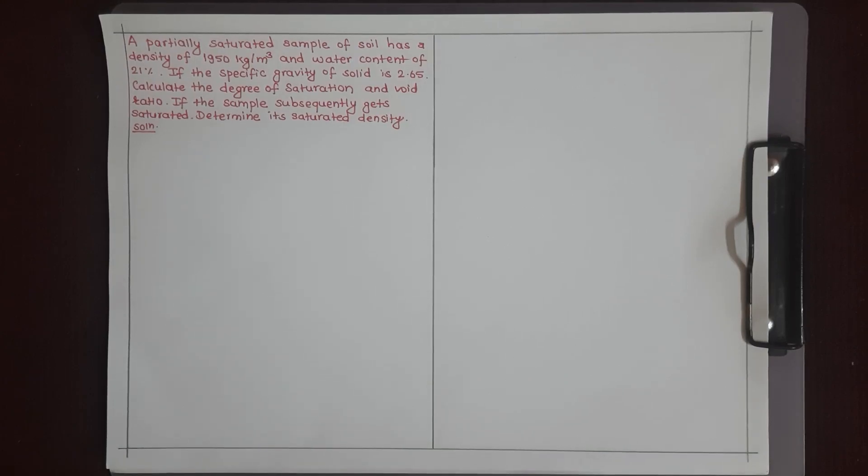A partially saturated sample of soil has a density of 1950 kg per meter cubed and water content of 21 percent. If the specific gravity of solid is 2.65, calculate the degree of saturation and void ratio.